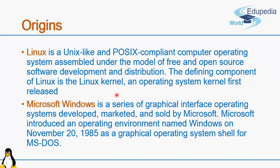Linux is a Unix-like and POSIX-compliant computer operating system. Unix is an operating system developed by AT&T, an American company, for use on supercomputers and mainframes, and it followed the POSIX standards. Linux was designed to be POSIX-compliant, meaning it is essentially a Unix clone. Anything you can do on Unix you can also do on Linux, and any software that runs on Unix can also run on Linux. Linux followed a model of free and open source software development and distribution.